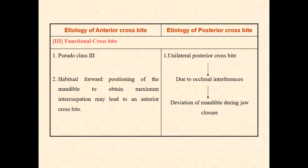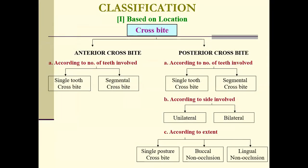Functional posterior cross bite: in unilateral cross bite, due to occlusal interferences — such as canine prominence — the patient deviates the jaw to one side to bite. To relieve the occlusal interferences, the mandible shifts during closure. These are the etiological factors of posterior cross bites.